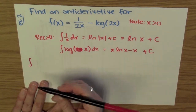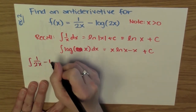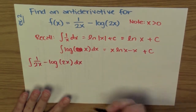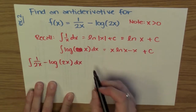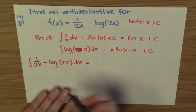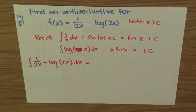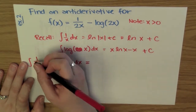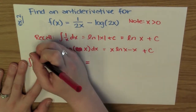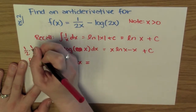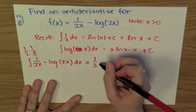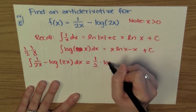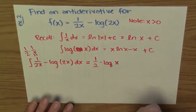So the anti-derivative of 1/(2x) - log(2x) dx. Since the anti-derivative of a sum is the sum of the anti-derivatives, I can treat these two parts separately. I can write 1/(2x) as (1/2)·(1/x). The 1/2 is a constant, so I just use the anti-derivative of 1/x, which in our case is log(x).